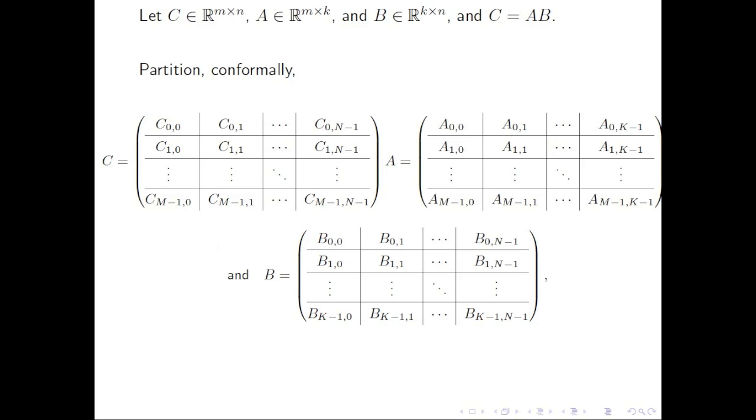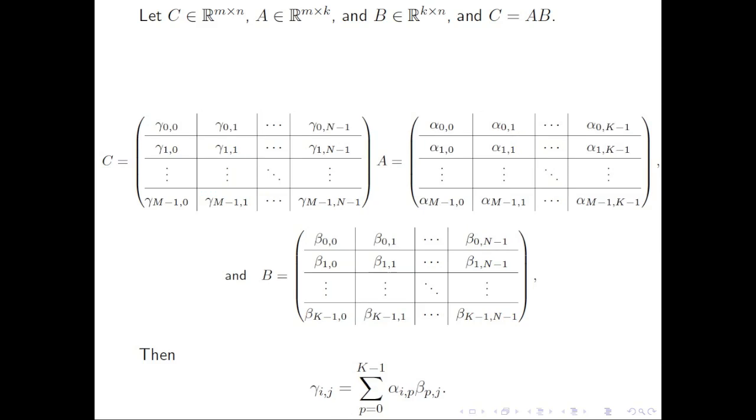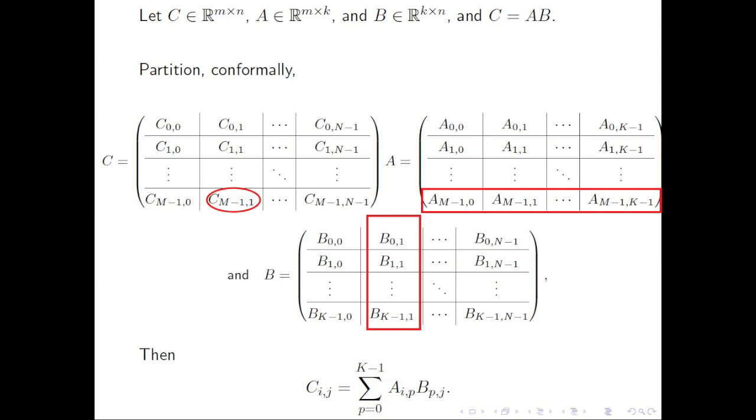Here is the general result. If you partition matrices C, A, and B conformally into sub-matrices, then the ij block of C is just computed as the dot product of the i-th row of blocks of A with the j-th column of blocks of B. Here, we remind you how matrix-matrix multiplication with matrices of scalars is defined. If you go back and forth, the similarities should be self-obvious.